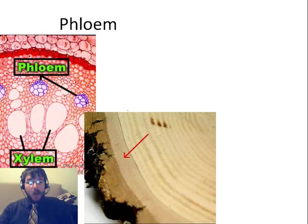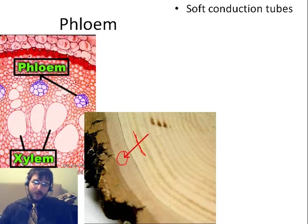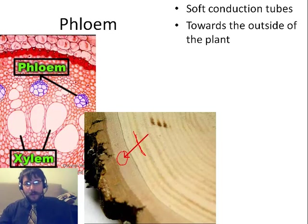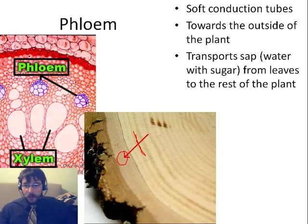Next is the phloem. If you're looking at a cross section of a stem, you'll actually see xylem on the inside — they just look like dead material — and then the phloem will be farther towards the outside. If you strip the bark off a plant, you could actually damage the phloem. These are very soft, on the outside, and their purpose is to transport sap — water, but primarily with sugar in it. So we think of the phloem as moving sugar through the plant.